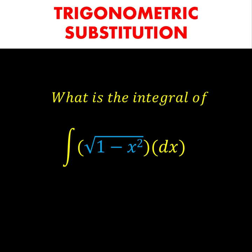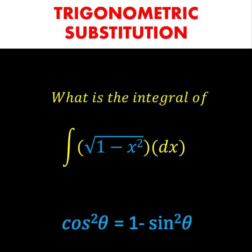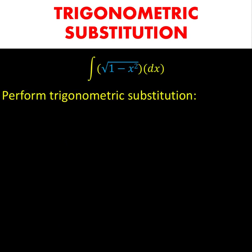Notice that in this problem, under the radical symbol is the expression 1 minus x squared. For families of functions that look like this, the best integration technique is to use trigonometric substitution. Recall that in our trigonometric identities, cosine squared theta is equal to 1 minus sine squared theta, which fits perfectly to the form of 1 minus x squared. So we are going to perform these substitutions.